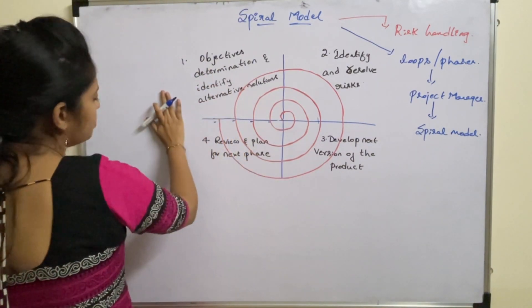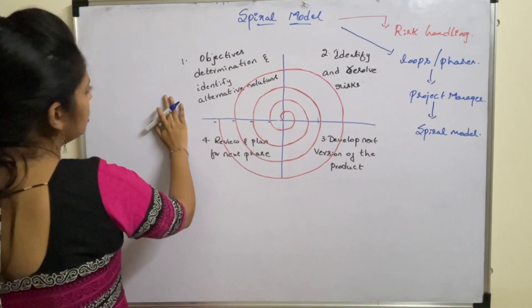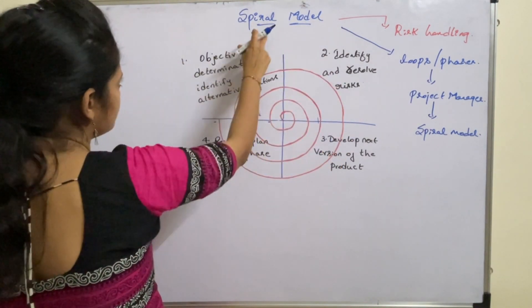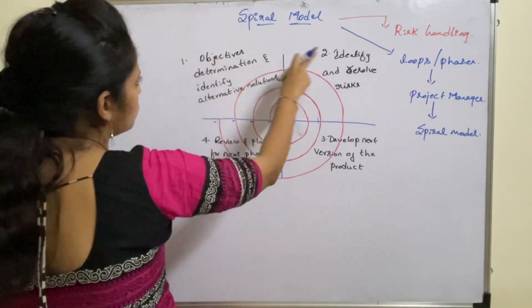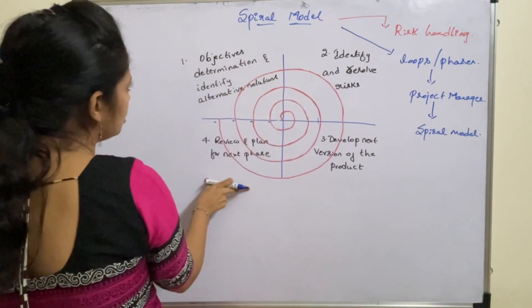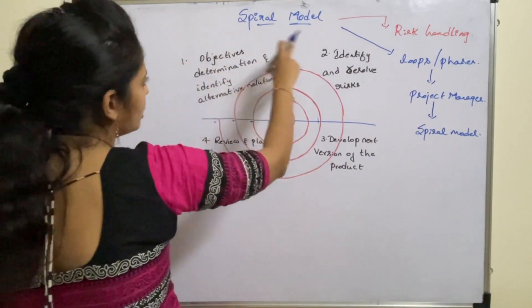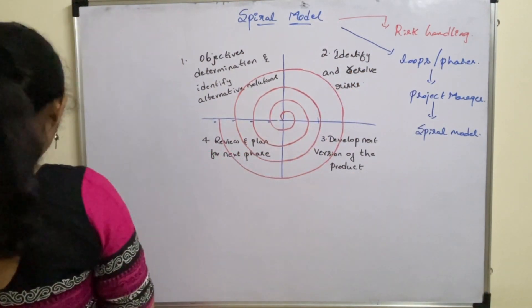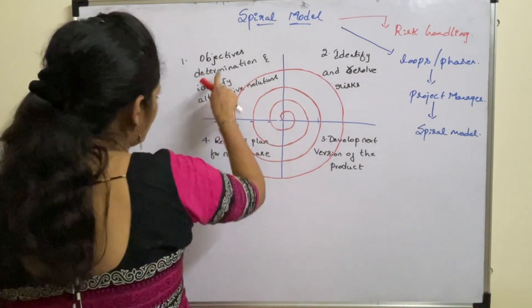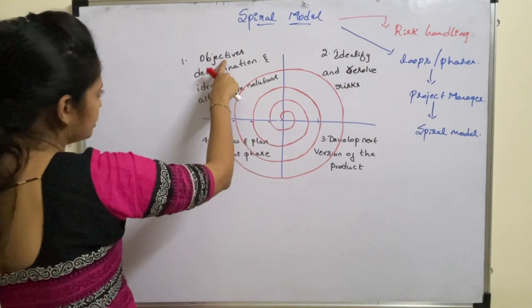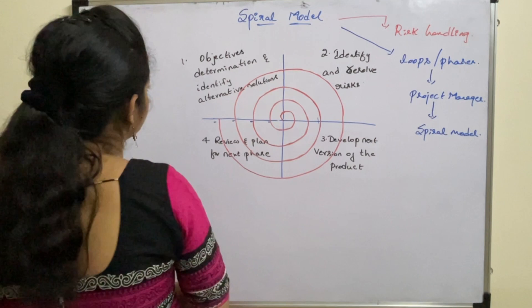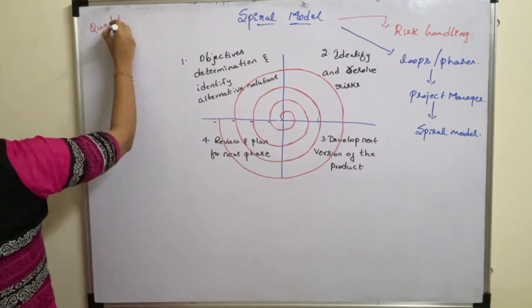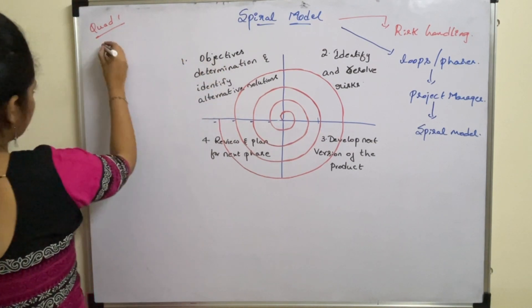Now let us see the process of the spiral model. Observing the diagram, there are a total of 4 quadrants in the spiral model — quadrant 1, quadrant 2, quadrant 3, and quadrant 4. In quadrant 1, requirements are first gathered from the customer.